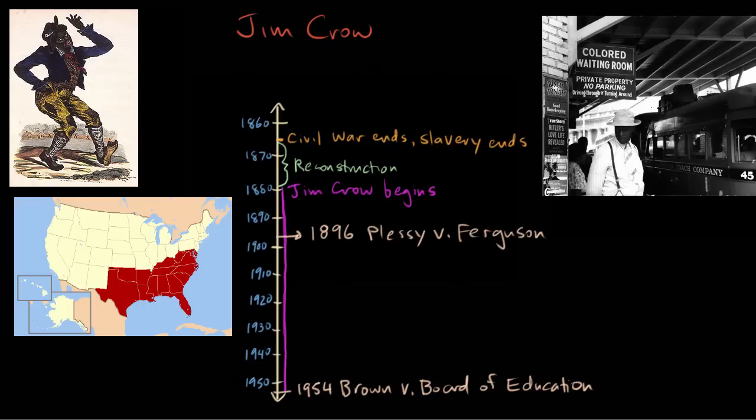In this video, I want to talk about the system of Jim Crow segregation, which was common in the United States from about 1877 to approximately 1954, although it goes a little bit farther than that.